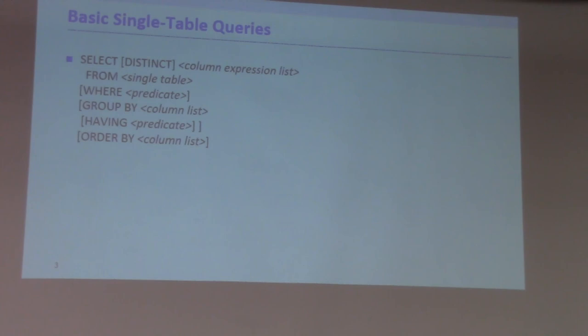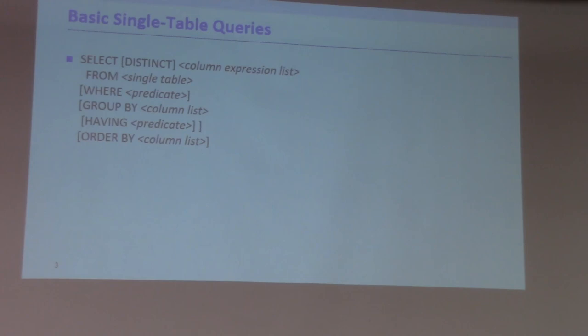Generally speaking, we have two types of queries we need to deal with. One is what we call single-table queries, meaning those query operators require access to only a single table of data. This is as complex as you can go for a single-table query — involving duplicate elimination because you have the keyword DISTINCT, GROUP BY, HAVING, and ORDER BY.